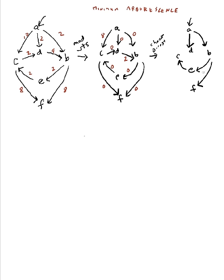We can see right here that we have an arborescence. Testing for arborescence: the tree goes A has two children D and B, B has two children E and F, and E has one child C. The cost: A to B is 2, A to D is 2, B to F is 8, B to E is 2, and E to C is 2 — so that's 2+2+8+2+2 = 16.